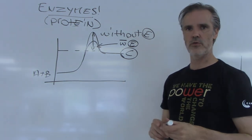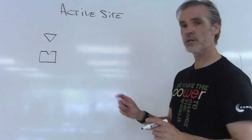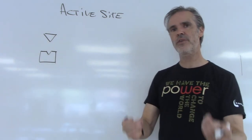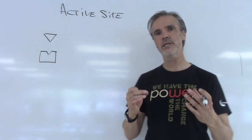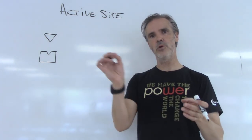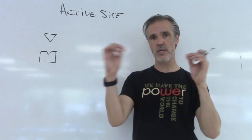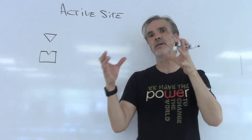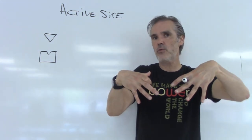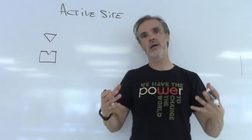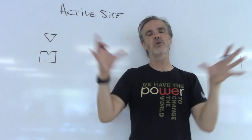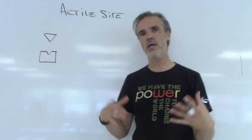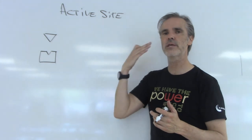We cannot talk about enzymes without talking about something called the active site. Remember: enzymes are proteins, proteins are made of amino acids, amino acids link together to form the primary structure, then interact to form secondary structures, which interact to form tertiary structures, and sometimes those form subunits — quaternary structure. We don't need to go there right now, but I wanted to keep that in the back of our minds. What I want to bring forward is the concept of what an active site is.